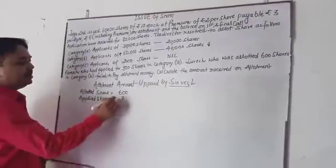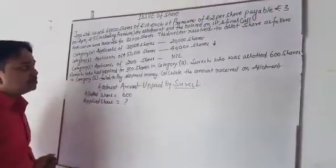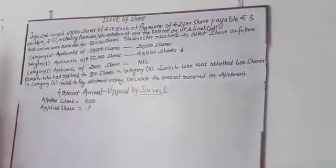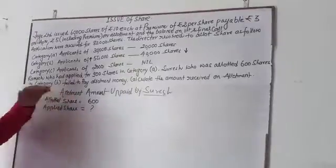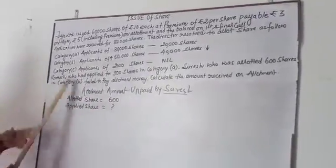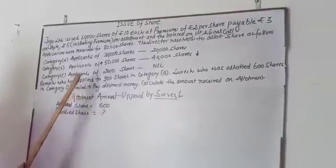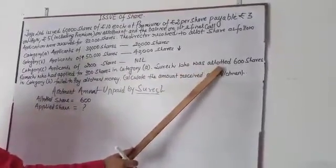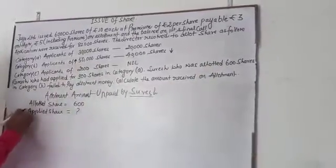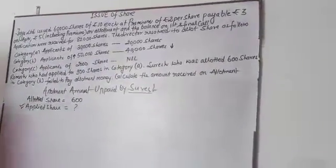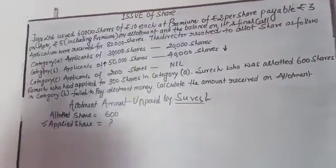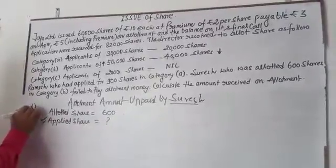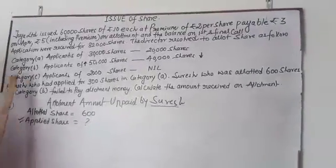You need to calculate applied shares — this is very important. Sometimes the portion is given in reverse. In the previous video we did the applied cases. Now if the number of allotted shares is given, you need to calculate the number of applied shares. I have given the formula here. Suresh comes under category number B.